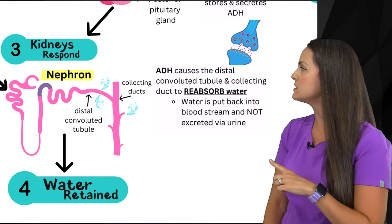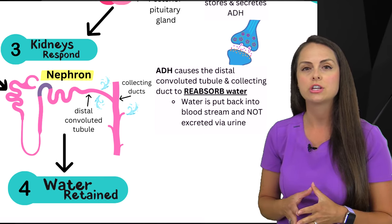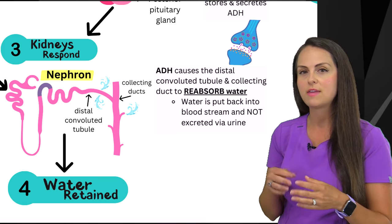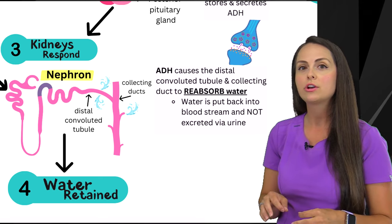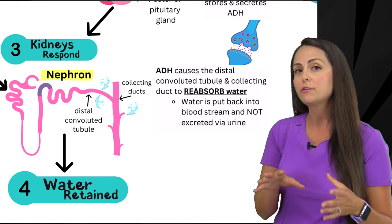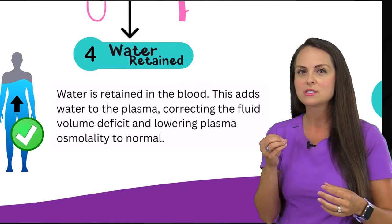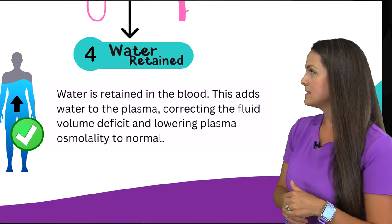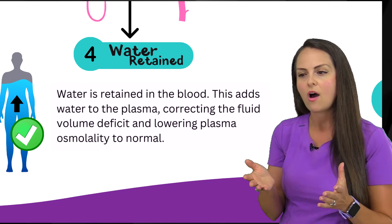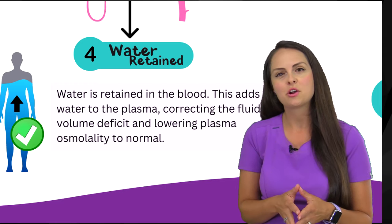ADH acts on two particular parts of the nephron: the distal convoluted tubule and the collecting duct. It causes those structures to reabsorb water — instead of putting water into the filtrate to be urinated out, the body reabsorbs that water back into the bloodstream. Since we have fluid volume deficit, we need that water back. This retained water helps normalize plasma osmolality by diluting the high solute concentration and evening out the water-to-solute ratio.